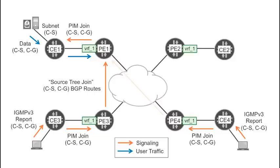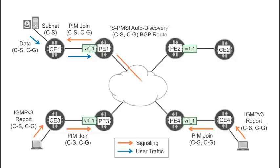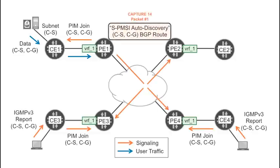Let's see how selective tunnels are actually signaled. When PE1 receives the first source tree join for a particular C-multicast flow, it advertises a selective PMSI auto-discovery BGP route. With this route, PE1 announces to the world that it is the head end of a P-tunnel that will be dedicated exclusively to the transport of this C-S, C-G flow.